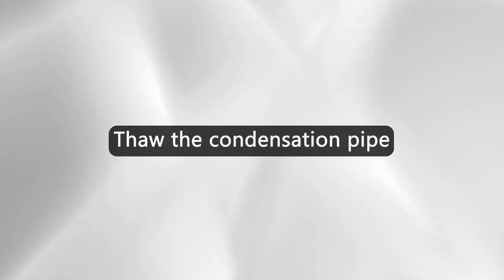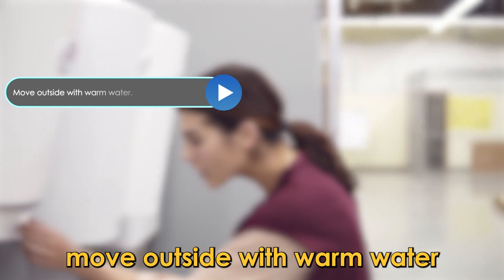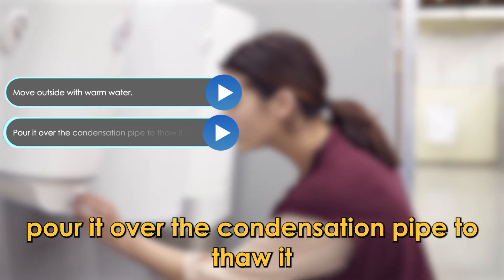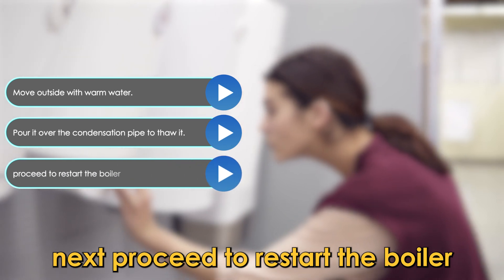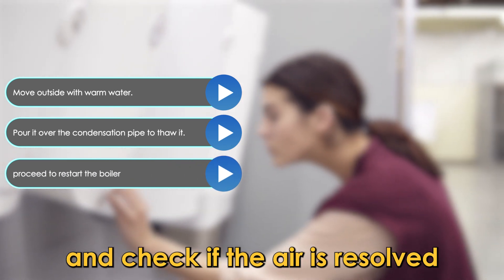Thaw the condensation pipe. Go outside with warm water and pour it over the condensation pipe to thaw it. Next, proceed to restart the boiler and check if the error is resolved.